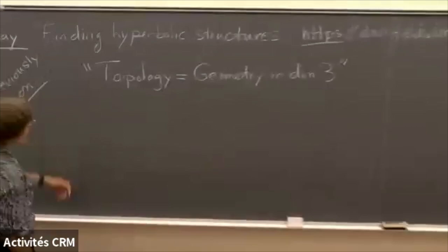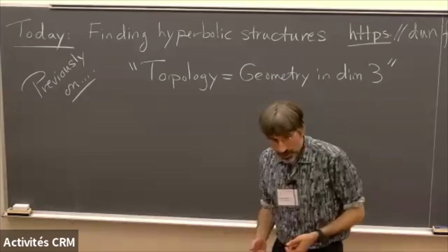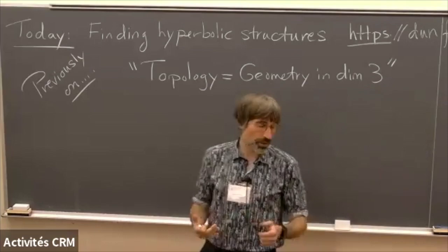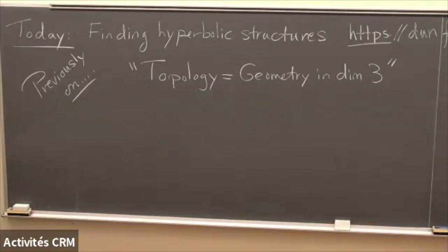Previously I talked about how geometry and topology coincide in dimension three due to geometrization. Three-manifolds have this geometric decomposition and in the most important case of hyperbolic geometry, that geometry is in fact unique. So any geometric invariant is a posteriori a topological invariant. I also demonstrated — via a computer — that you can actually find hyperbolic structures in practice. What I'm going to do today is talk about how you encode a hyperbolic structure so you can tell it to a computer.